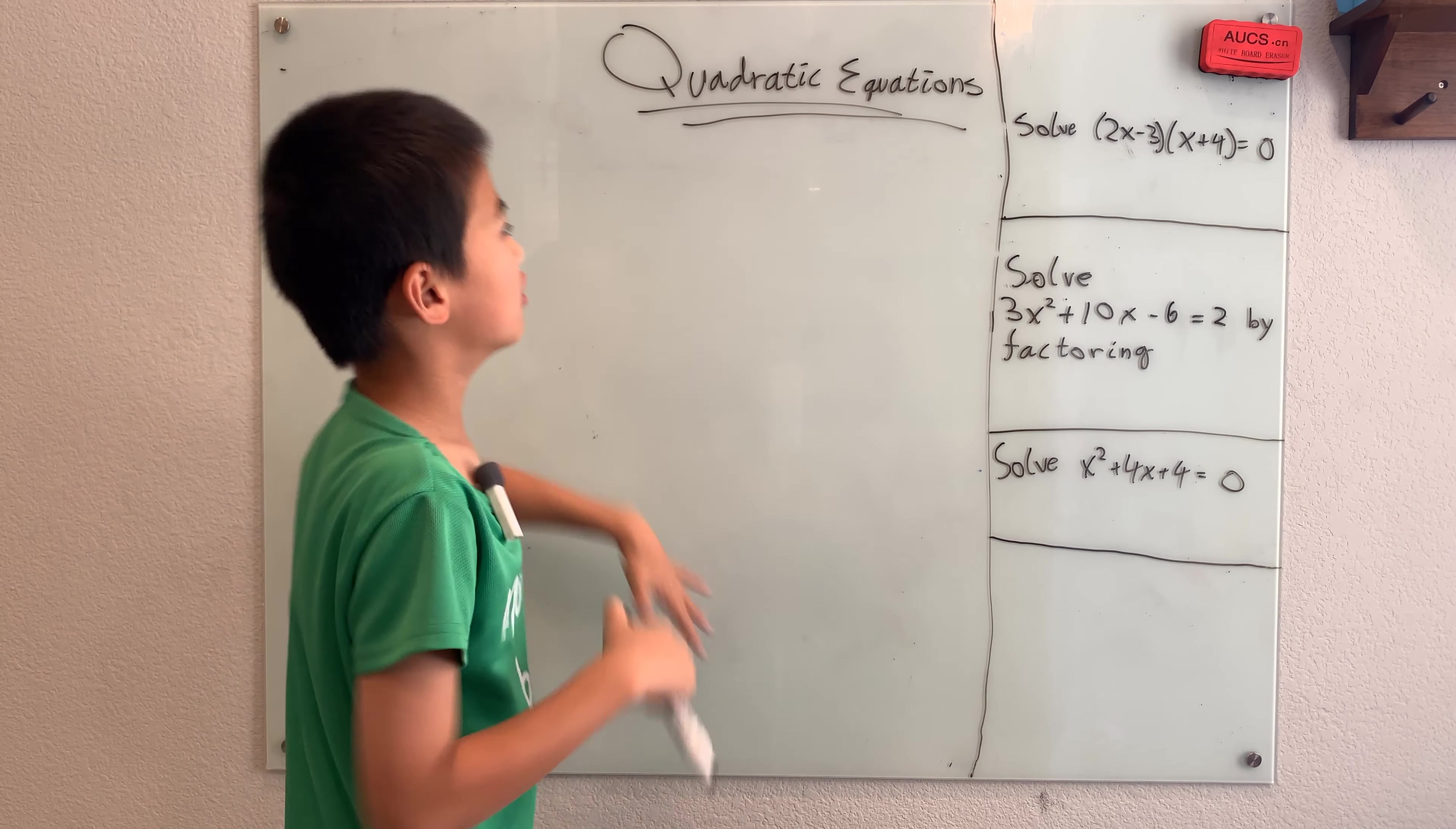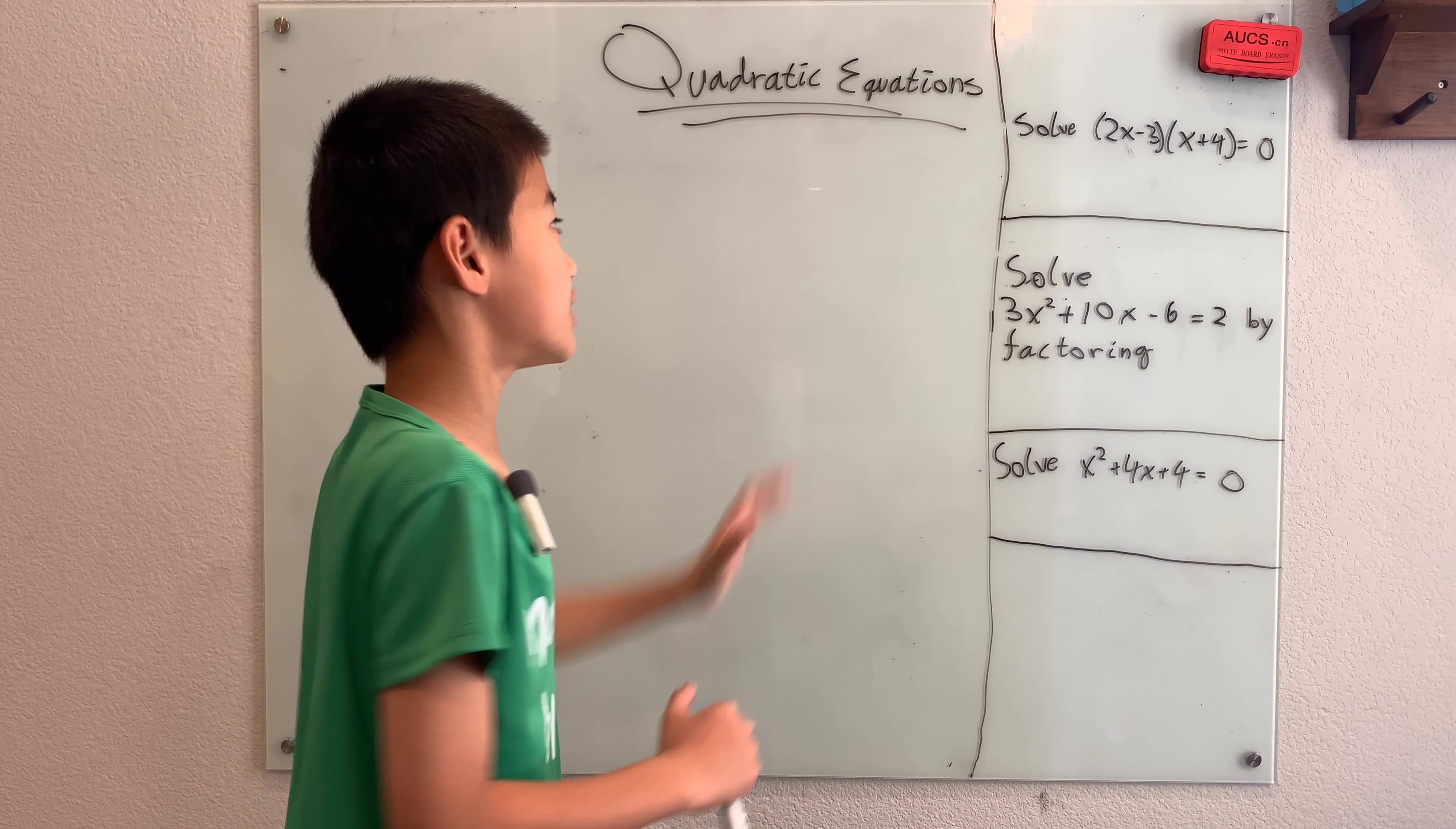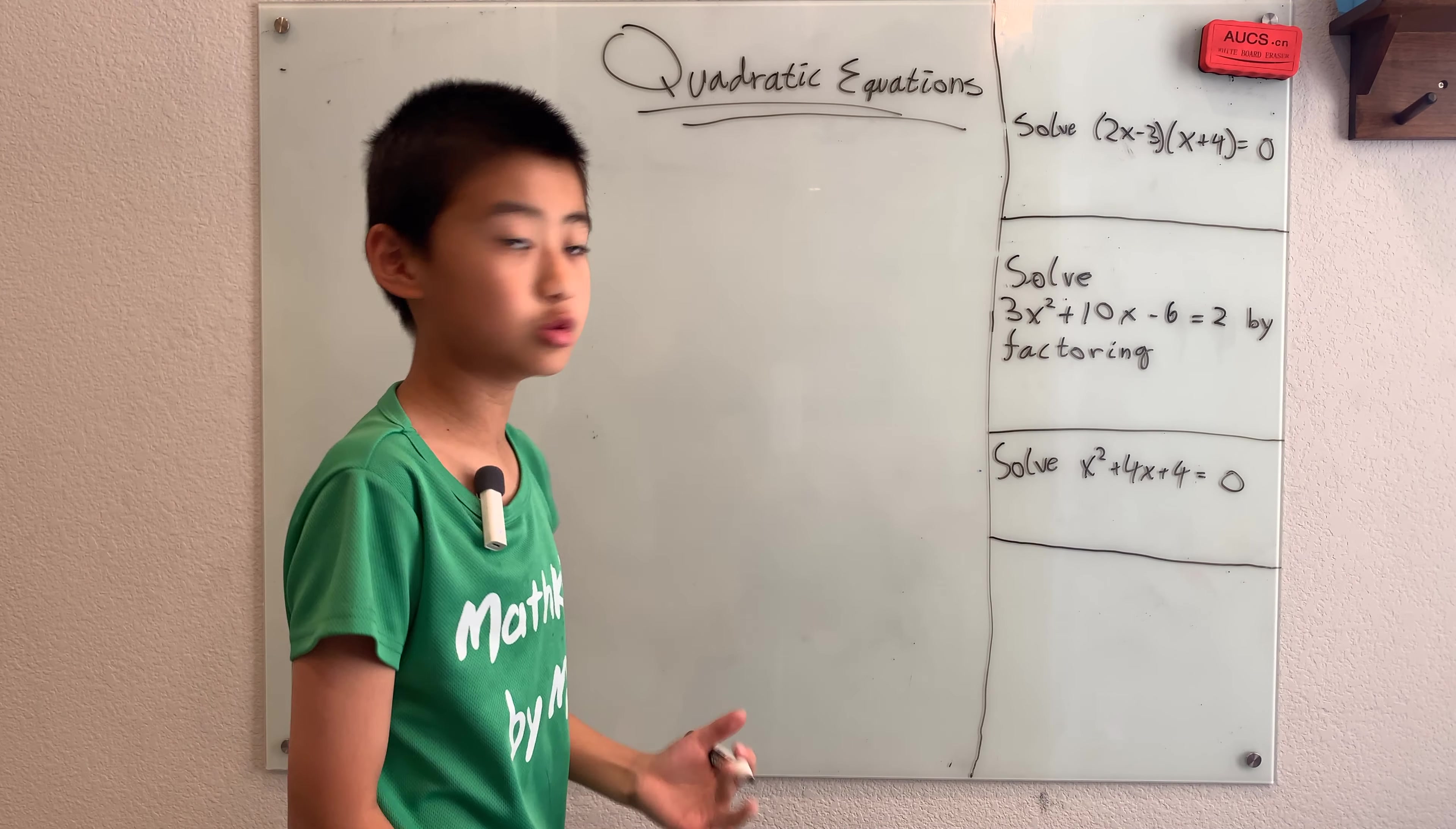Instead of trying to explain a whole lot and then getting into the problems, I'm going to get right into one of these problems. And I made it very simple, although it does have a big connection with quadratic equations. So solve 2x minus 3 times x plus 4 equals 0.